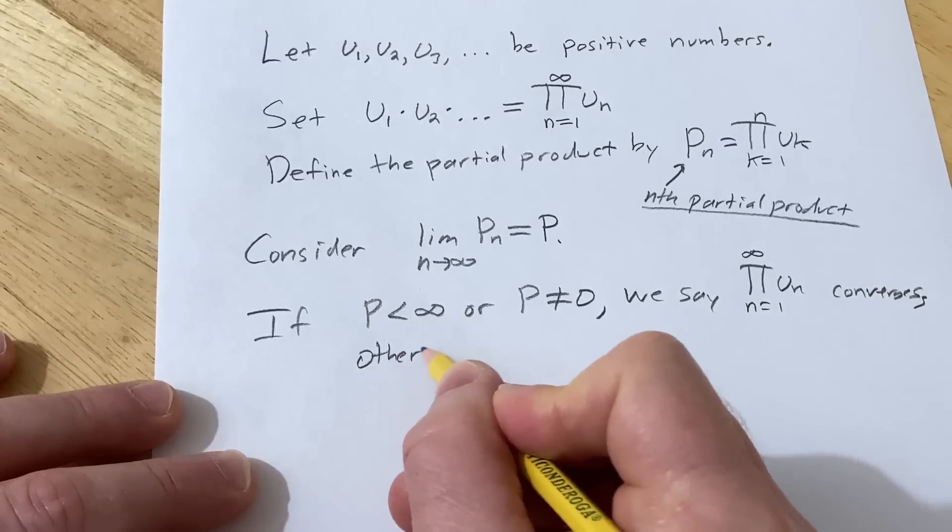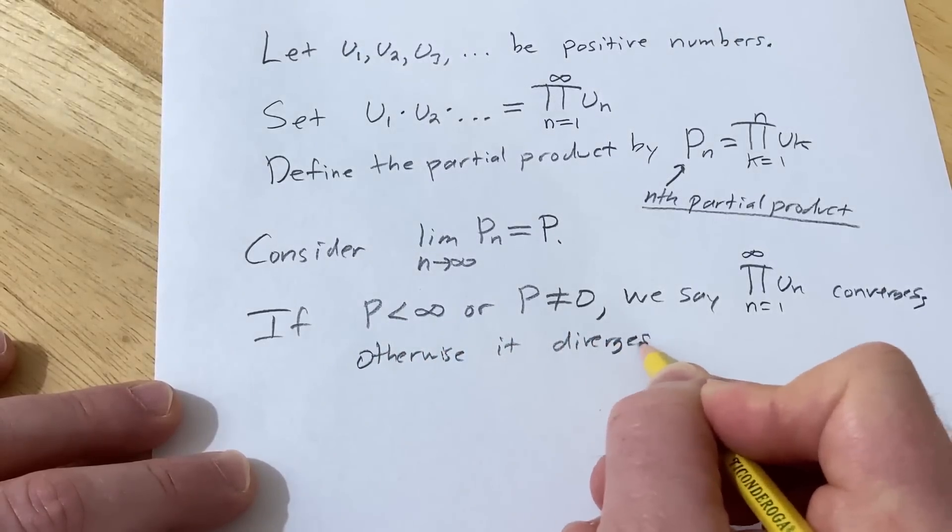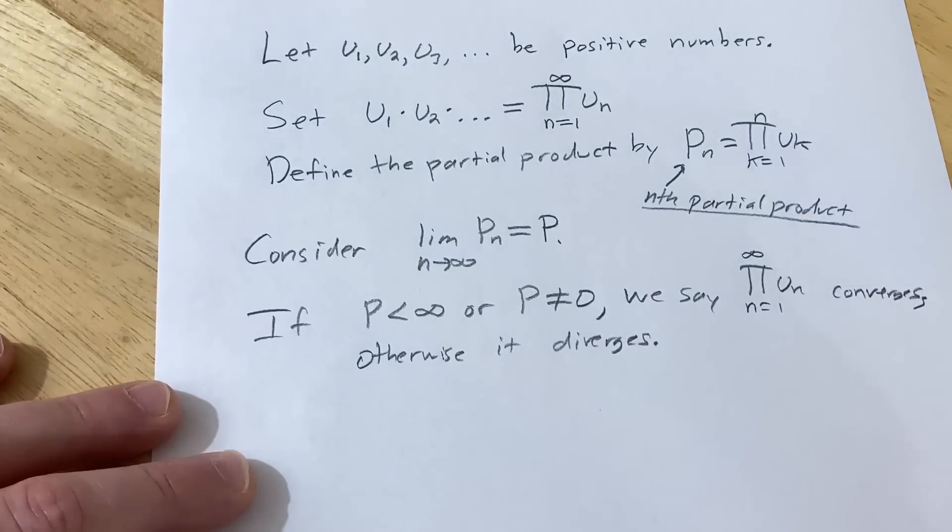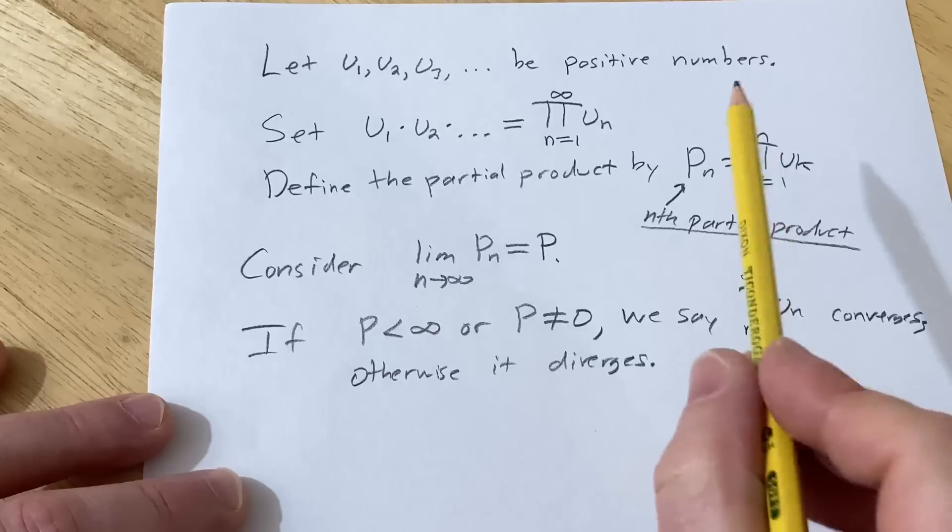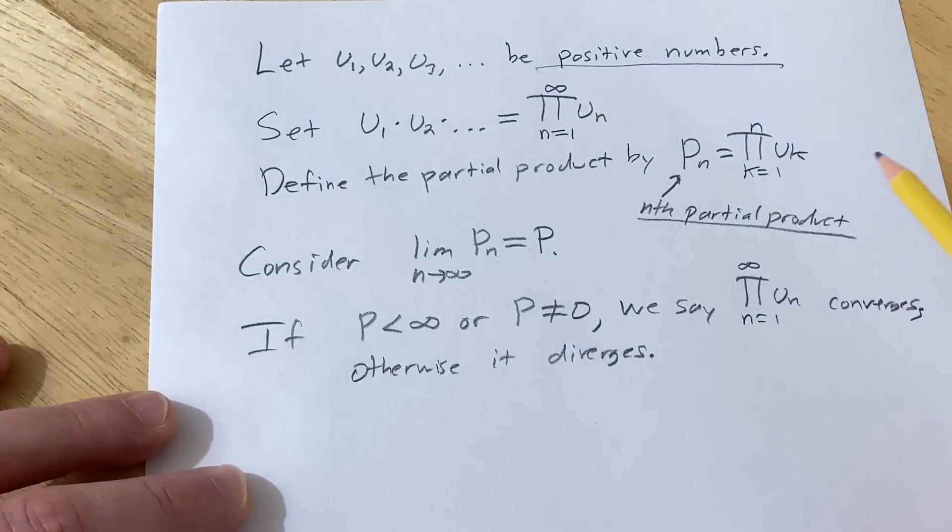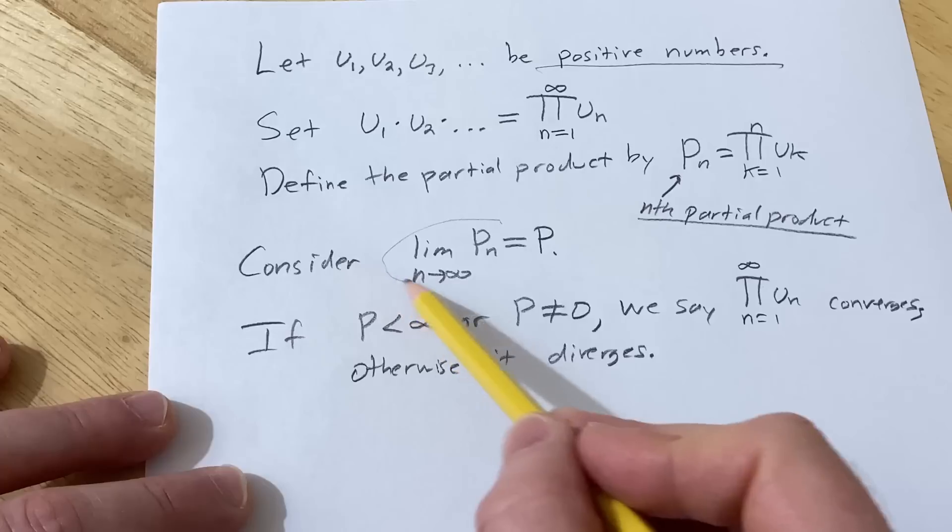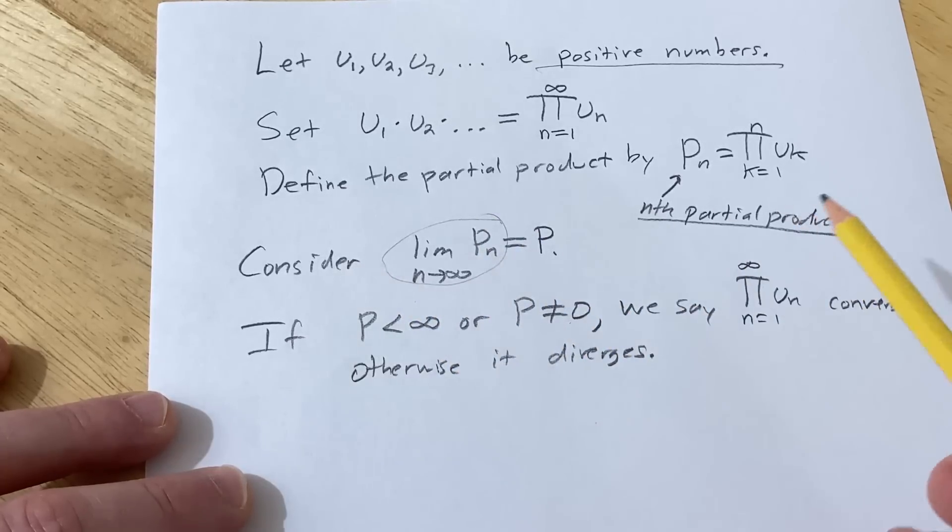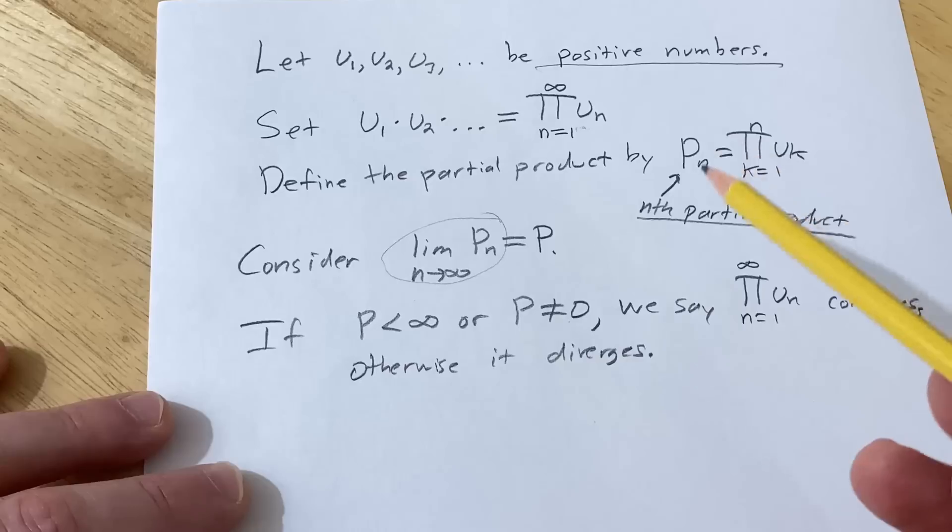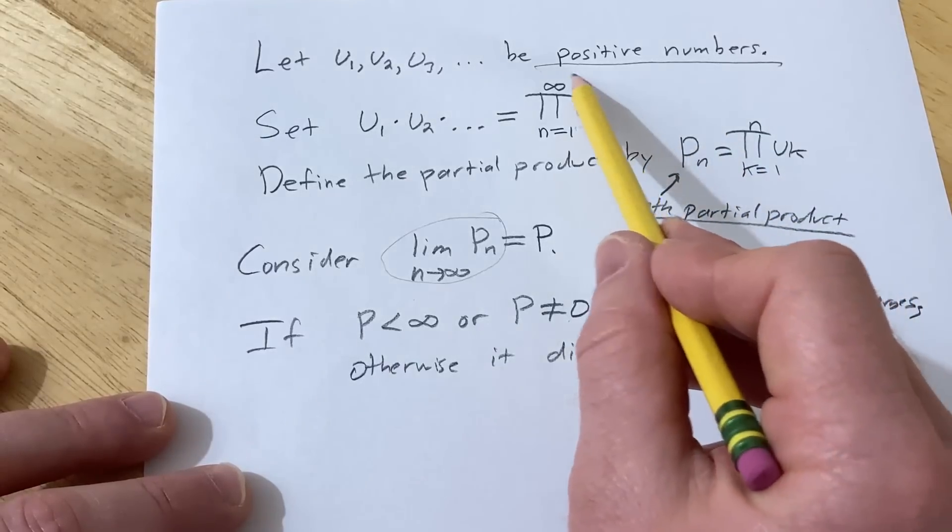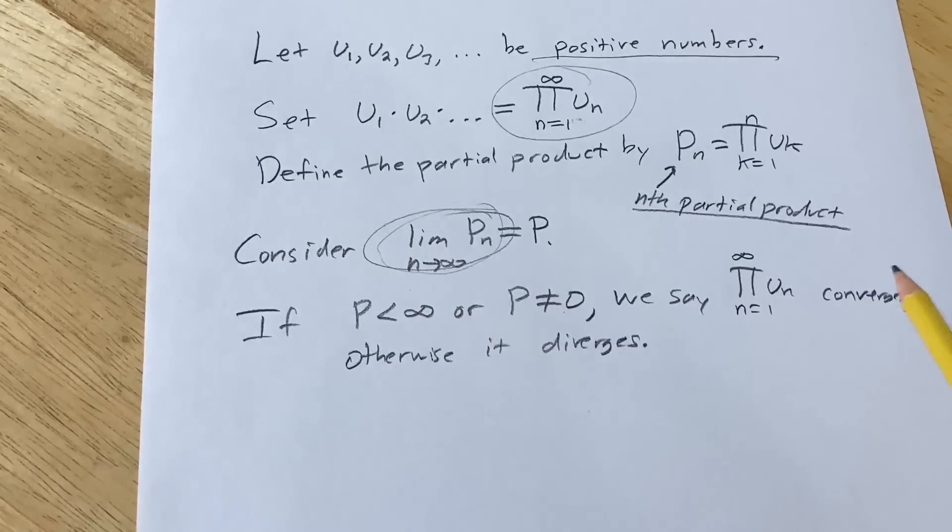And again other books do it different ways. They allow for more cases than what we're allowing here. We're being pretty restrictive by allowing only positive numbers. So basically if this limit exists and it's not equal to 0 that's going to be the answer to this here. So let's go ahead and do an actual problem now where we actually compute the value of an infinite product. To do that all we have to do is figure out this limit.